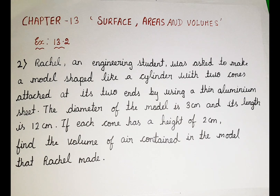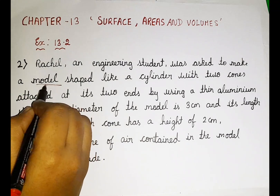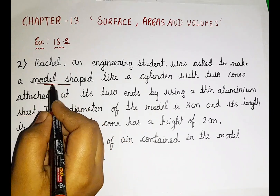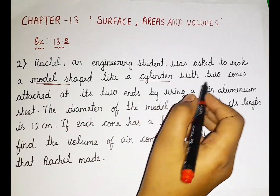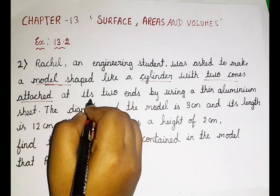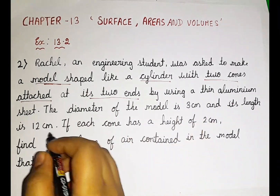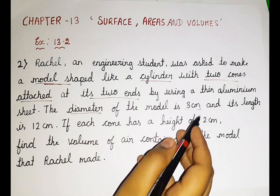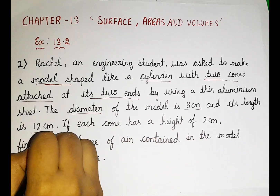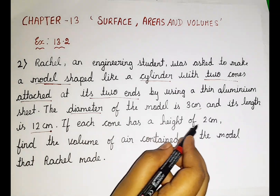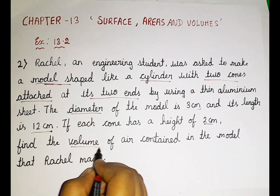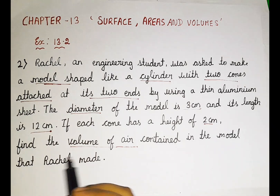So here there is a girl whose name is Rachel. She is an engineering student. She is supposed to make a model shaped like a cylinder with two cones attached to its ends, using an aluminum sheet. The diameter of the model is 3 centimeter, its length is 12 centimeter, and each cone has a height of 2 centimeter. We are supposed to find the volume of air contained in the model that Rachel made.